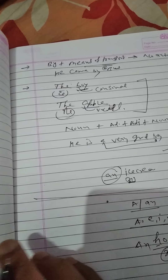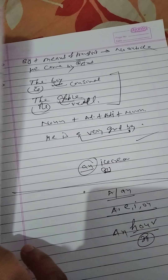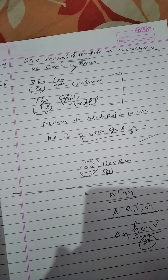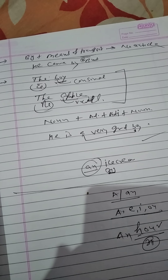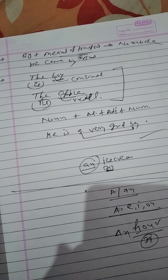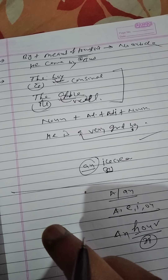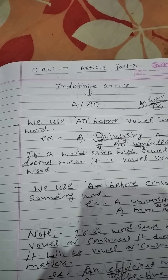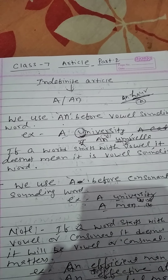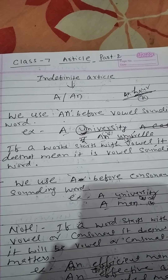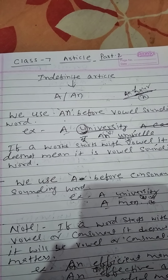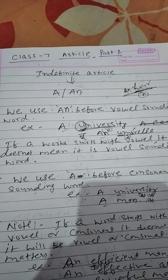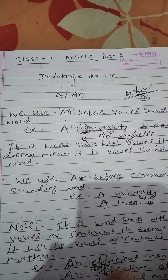If you go to any shop and say 'give me ice cream,' you are not specific about any type of ice cream — you just say 'give me an ice cream.' So A and AN are not specific; these are indefinite articles. 'Give me a pen' — you are not specific about the pen, you just say 'give me a pen,' meaning any pen.